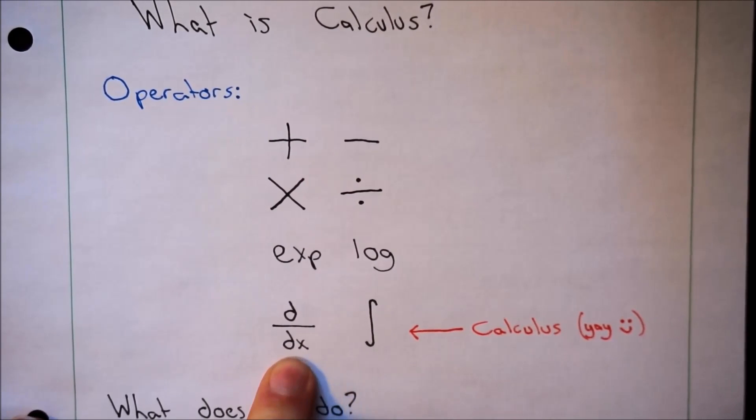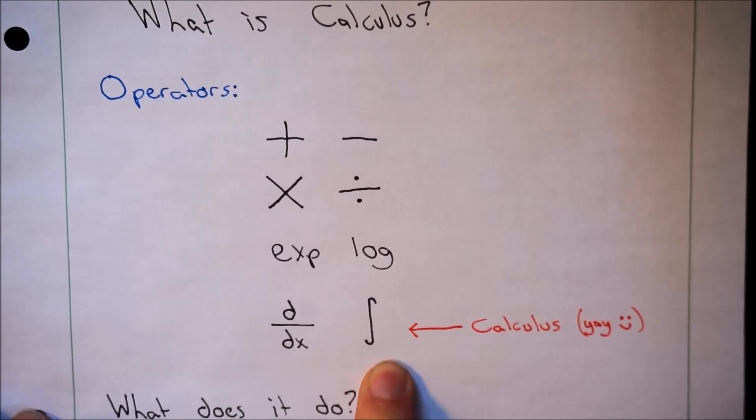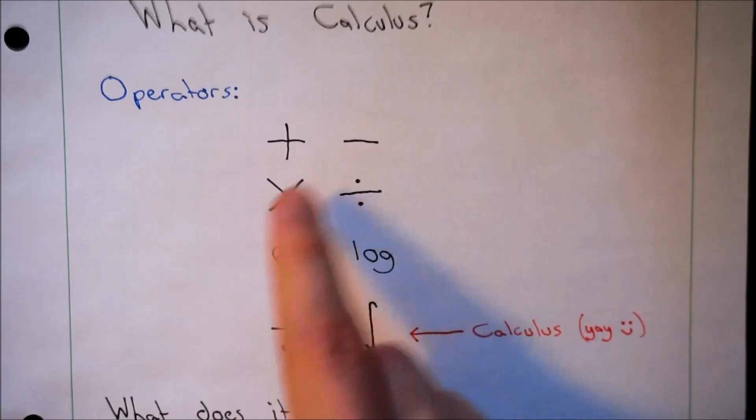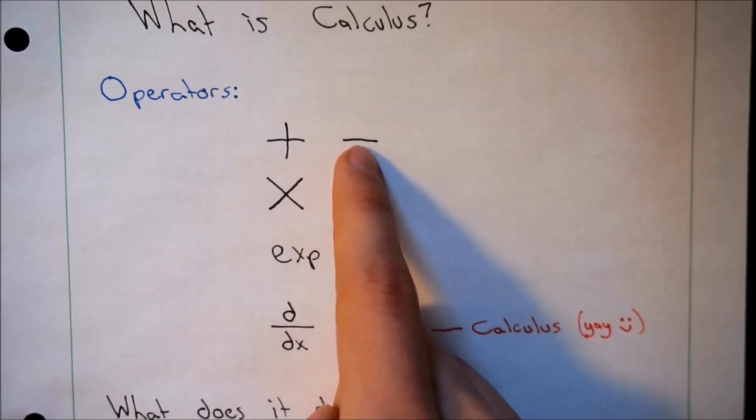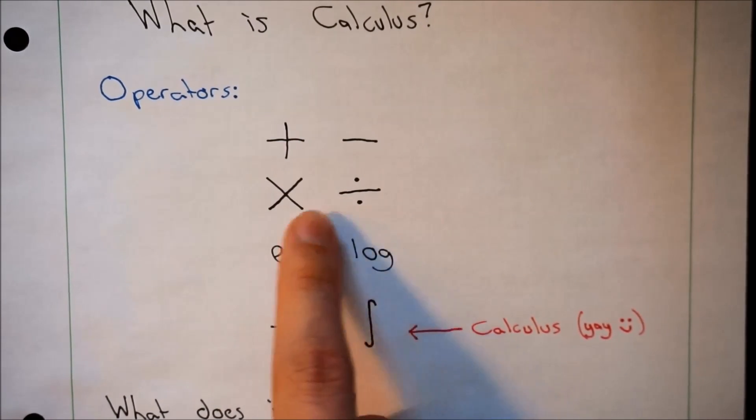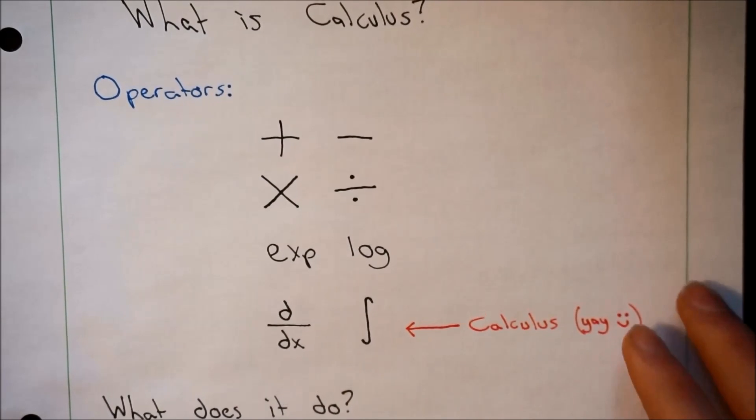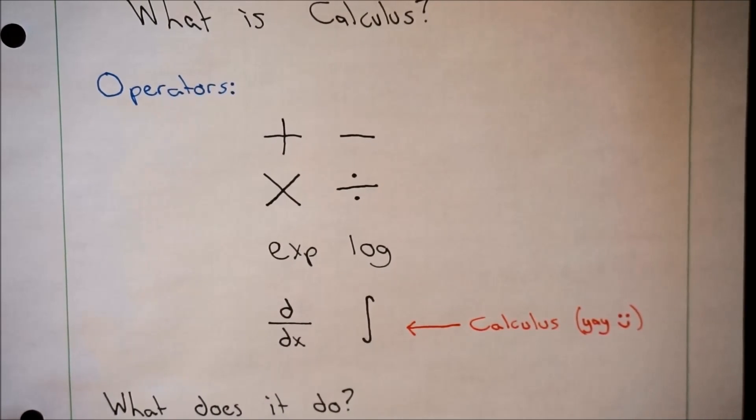In calculus you have derivatives and integrals, and they're the same kind of thing. You'll notice these come in pairs. Minus is the opposite of plus, division is the opposite of multiplication, while integrals are the opposite of derivatives. They're sometimes even called antiderivatives.